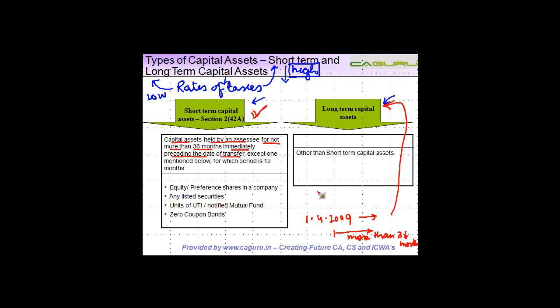a short-term capital asset. But this general rule is applicable on all capital assets except the ones mentioned below, for which the period is 12 months. So in case of these four assets which I have just pointed out here, if you own it for more than 12 months it is a long-term capital asset. If you own it for less than 12 months, then it is a short-term capital asset.